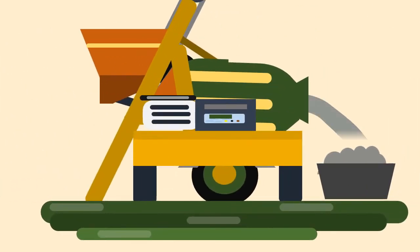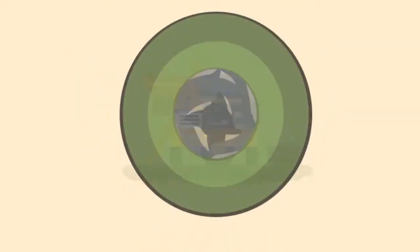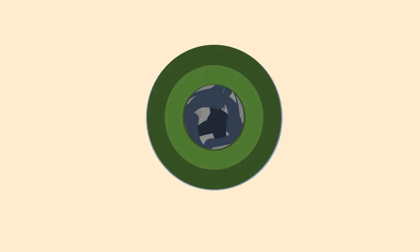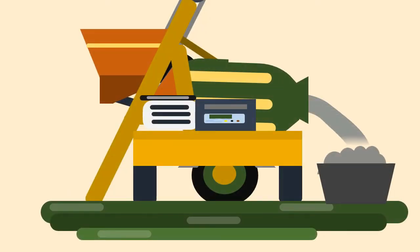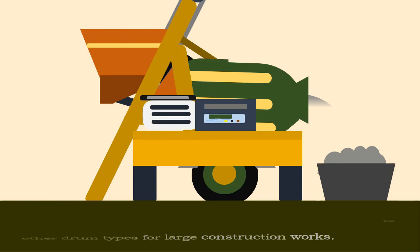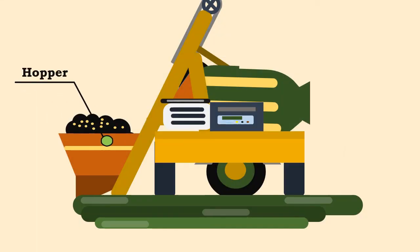In the non-tilting type, the output end is fixed with an inclined chute. In the reversing drum type, the cylindrical drum consists of two sets of blades — one set mixes the concrete while another set rotates in the opposite direction, which forces the discharge of concrete. The reversing drum type is commonly adopted for large construction works.